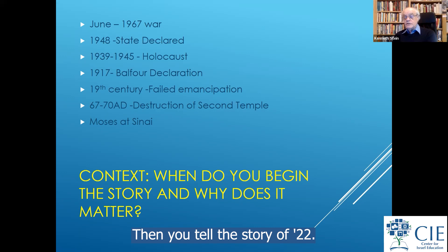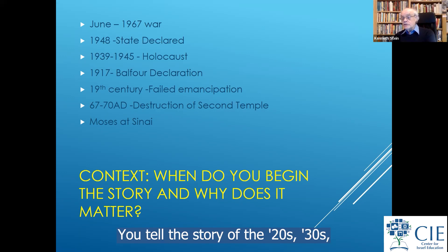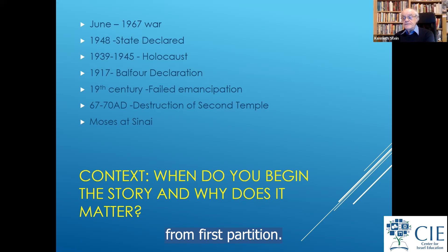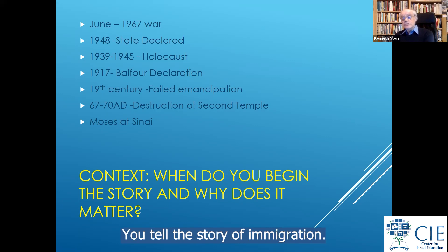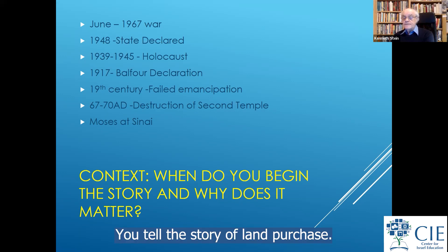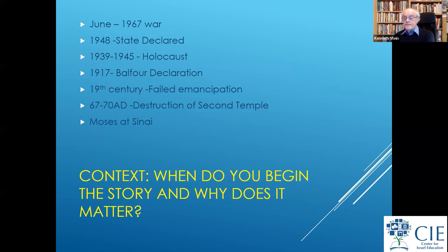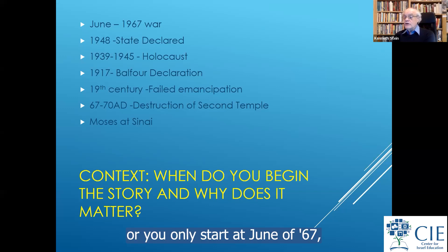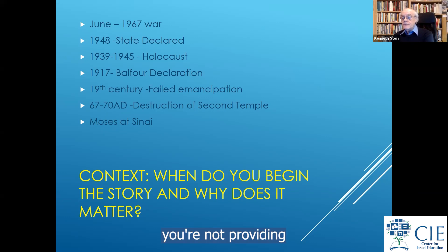Then you tell the story of 1922, the 1920s and '30s, from first partition; you tell the story of the Shoah, immigration, and land purchase. But if you only started from 1939 to '45, or only from 1948, or only from June 1967, you're not providing a full length of context.